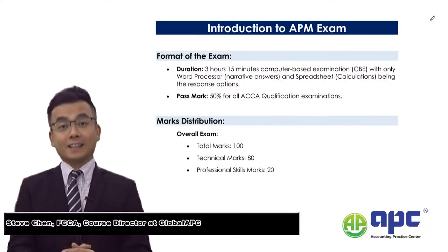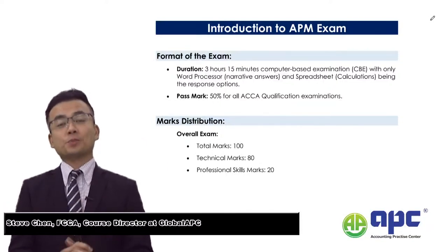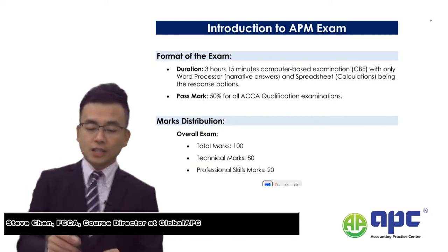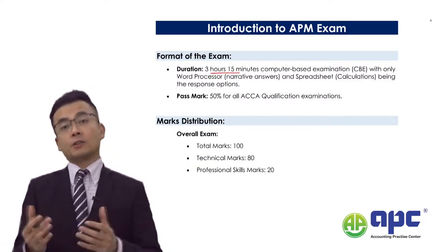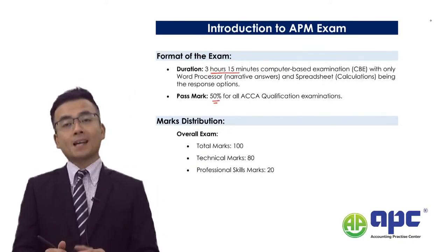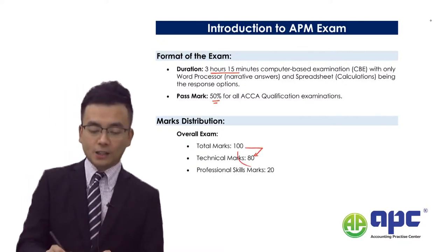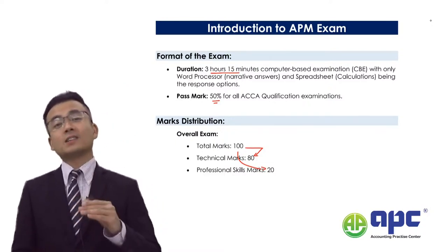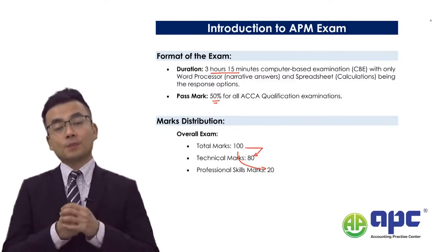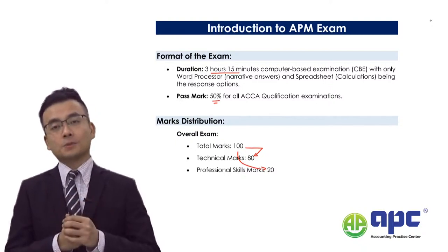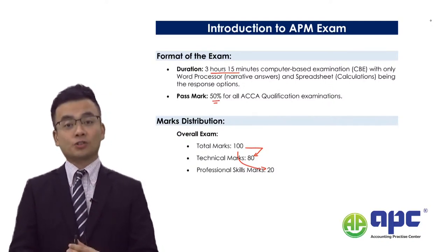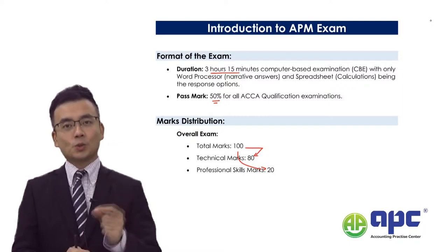Welcome to the introduction to Advanced Performance Management paper. My name is Steve. The exam is 195 minutes, which means 3 hours 15 minutes in total, and 100 marks in total with 50 as the passing mark. The 100 marks will be divided into 80 technical marks and 20 professional marks — these are quite subjective marks. You will need to demonstrate your commercial acumen skills in all questions in the APM paper in order to score these marks.